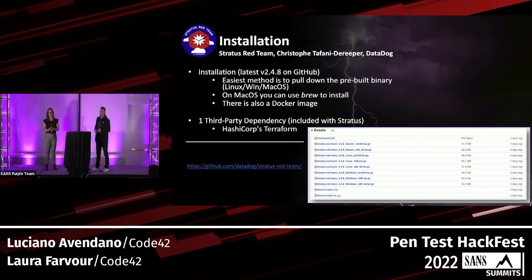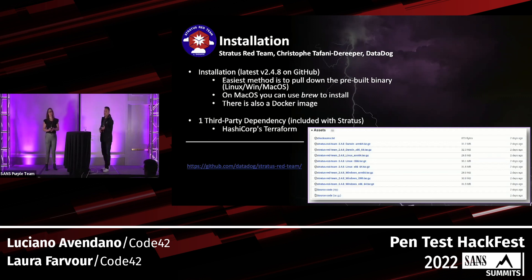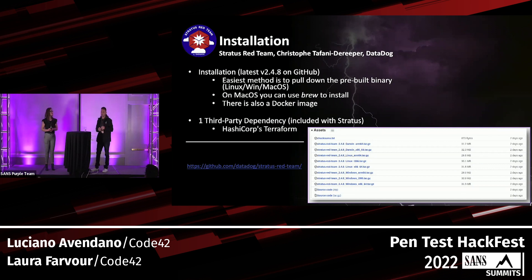Installation is very simple. The quickest method is to pull down the pre-built binary available on GitHub for your operating system. On macOS you can use Homebrew to download it with all dependencies already handled — and there aren't many. There's also a Docker image. The one third-party dependency worth mentioning is HashiCorp's Terraform, which is crucial to execution. Stratus uses Terraform to do the instrumentation for the pre-setup, what Stratus calls the warm-up infrastructure.